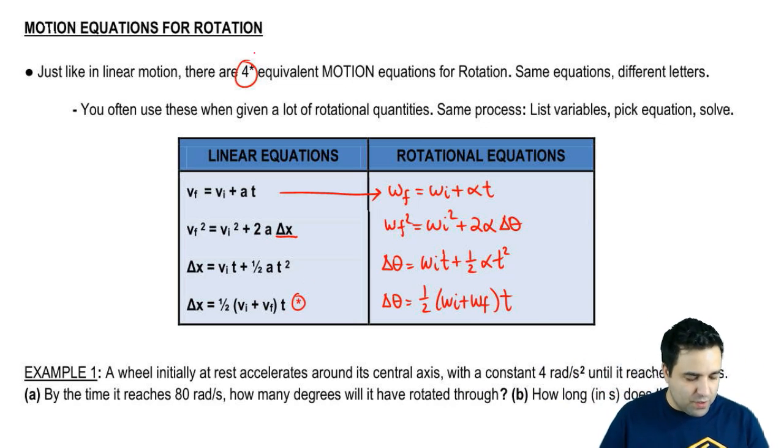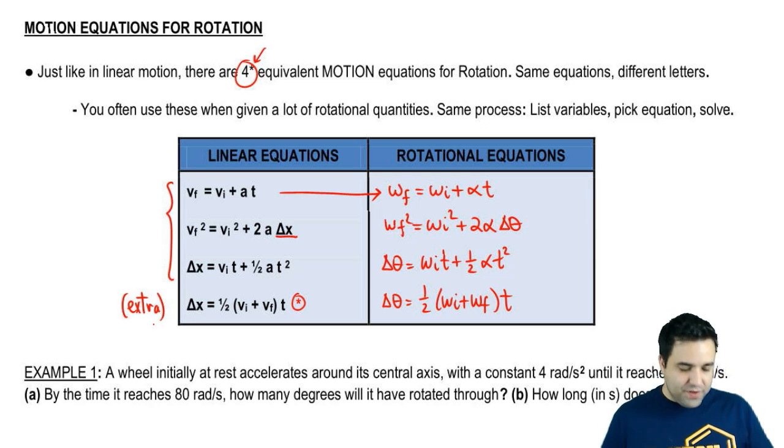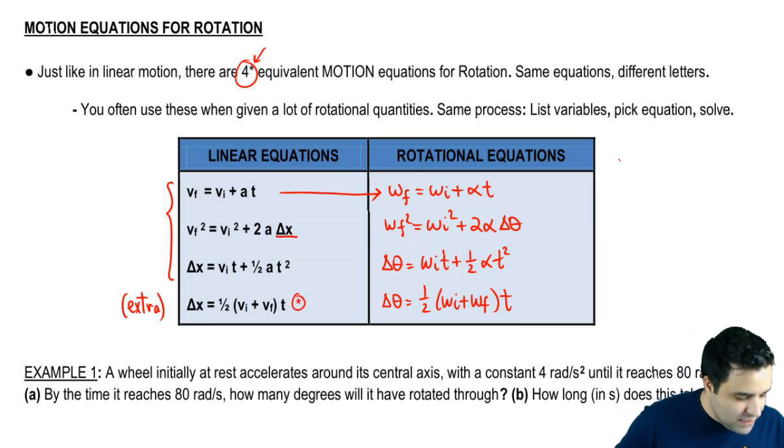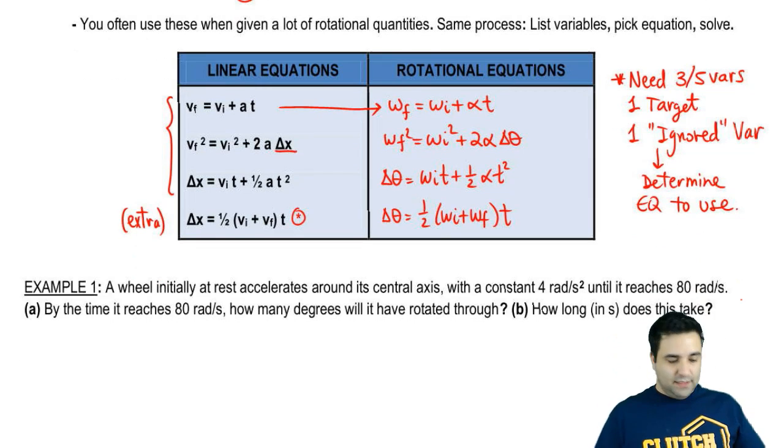I have a star here, an asterisk, because in some cases your professor may only give you these three equations and want you to stick to three of them. This is the extra fourth equation. Remember also that when you're solving motion problems, you need to know three out of five variables. One variable will be your target, and one variable will be your ignored variable. And this is the one that will determine the equation to use.